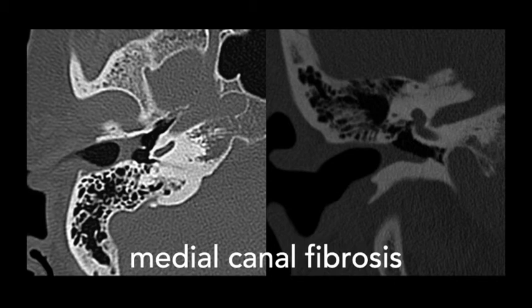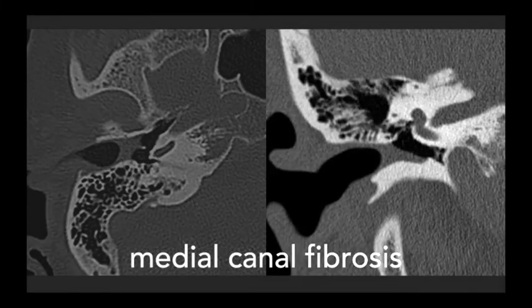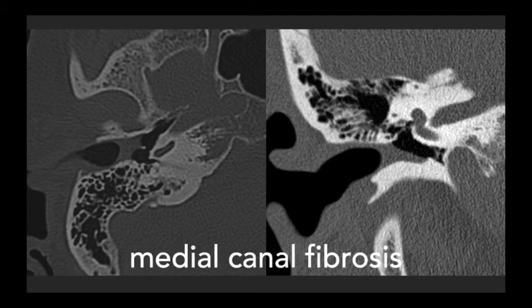In contrast, medial canal fibrosis involves actual fibrotic changes along the medial external auditory canal abutting the tympanic membrane. On imaging, this soft tissue abutting the tympanic membrane often has a crescentic shape superficially, and the canal is not enlarged. This commonly occurs after some sort of injury to the squamous epithelium of the EAC — post-infectious from otitis externa, from tumors, radiation, surgery, or trauma — it is a fibrotic response, as opposed to keratosis obturans which is a keratin plug stuck centrally.